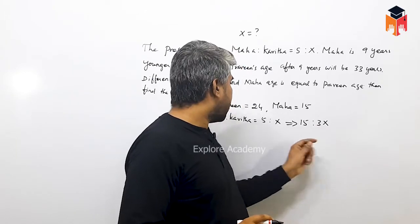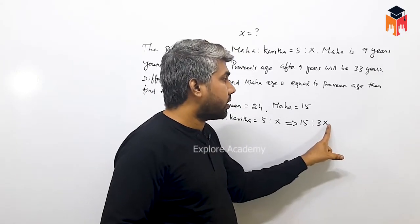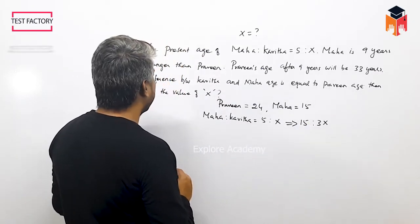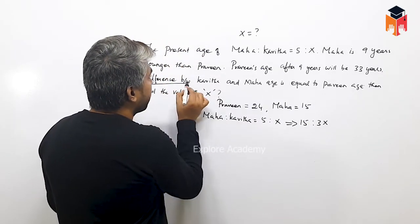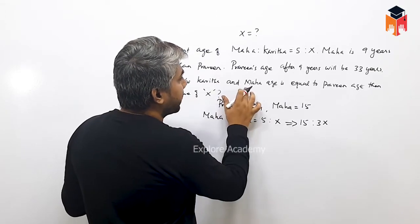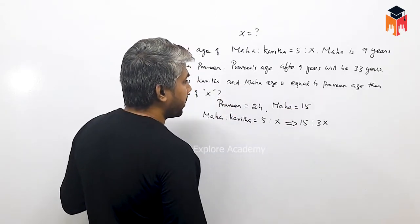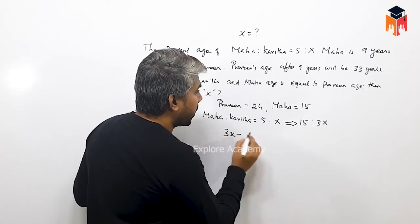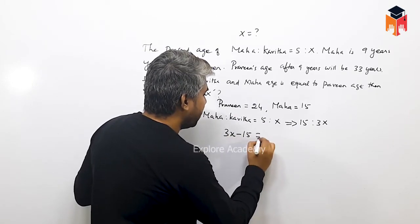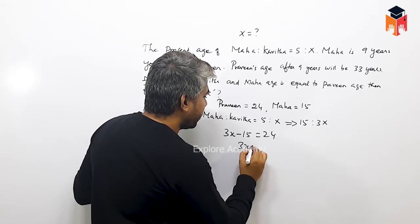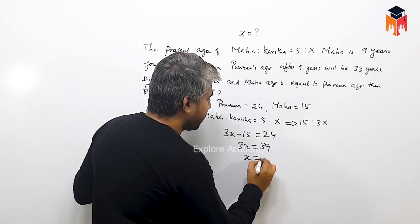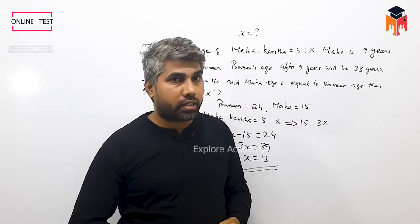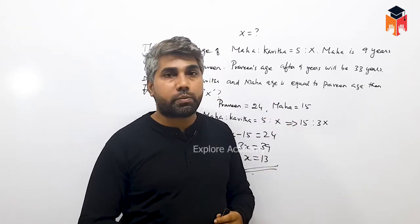So Kavitha equals 3x. The difference between Kavitha and Maga equals Praveen's age: 3x minus 15 equals 24, so 3x equals 39, and x equals 13. This is the answer.